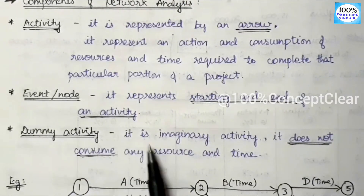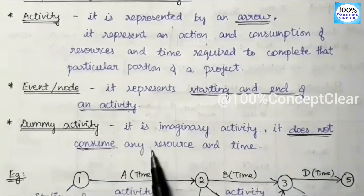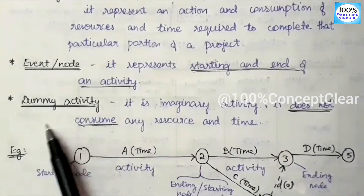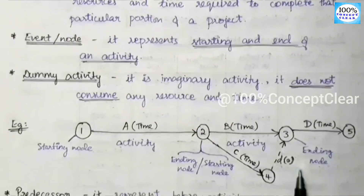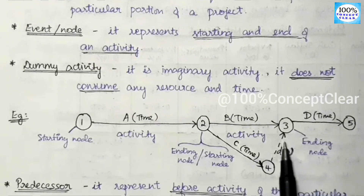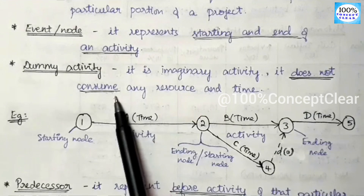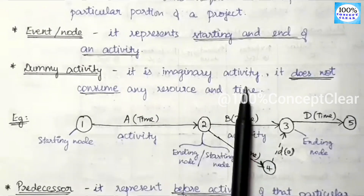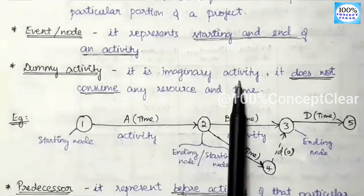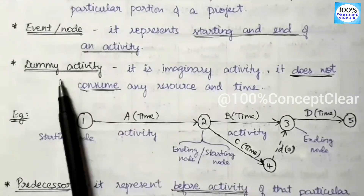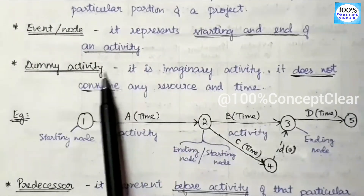The next component is dummy activity. It is an imaginary activity — it does not consume any resources or time. Activity is represented by a solid arrow, whereas dummy activity is represented by a dotted arrow. This dummy activity does not consume any resources or time because it is not a real activity; it is used to reduce the complexity of the network diagram.